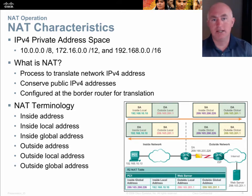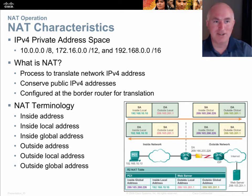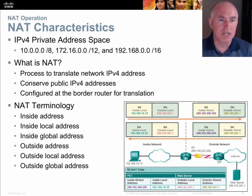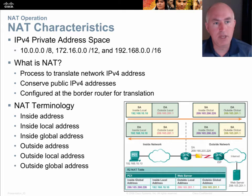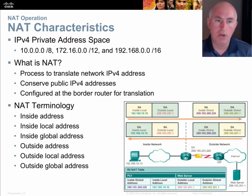NAT is a process of keeping a table of what's coming in and going out so that packet IP addresses can be removed and replaced. As packets go out, the private source addresses are replaced with the router's public address. On the way back in, the public address is removed and the private address is reapplied to the packet header. This takes enhanced CPU, a lot of RAM, and adds delay. It does conserve the public IPv4 address space, and it is always configured at the border of your network.